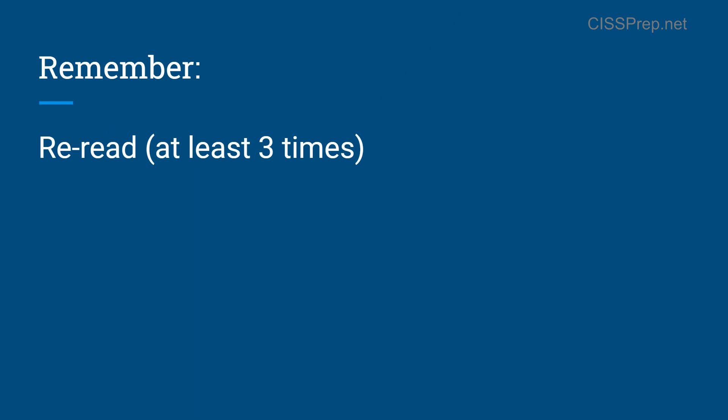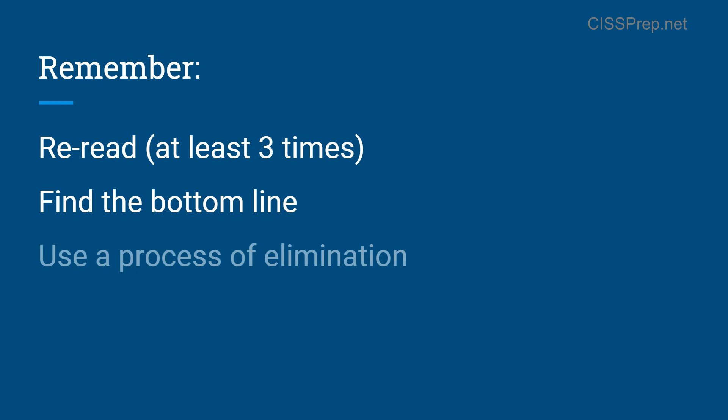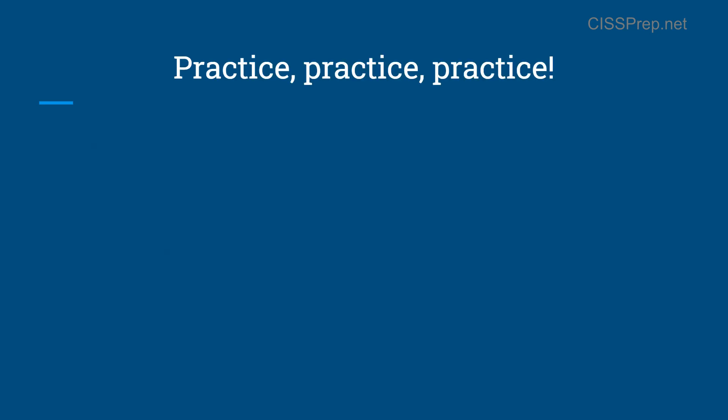There are a few other types of questions you'll come across on the exam, such as matching meanings to terms or putting phases in order — you'll only get one or two of these at most. Always keep in mind our previous advice: reread the question at least three times, try to find the bottom line or what the question is actually asking, and use a process of elimination — always use the process of elimination because that's what's going to save you in the end. The key to success in this exam is to simply practice, practice, practice.